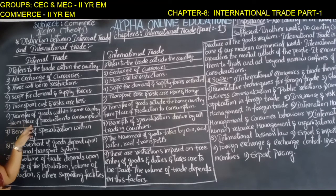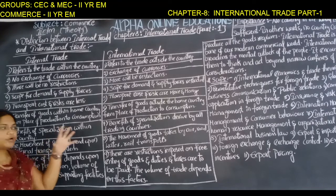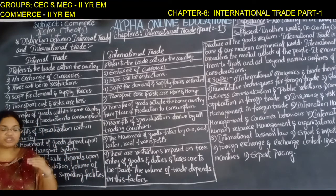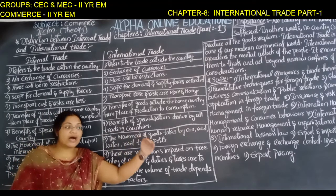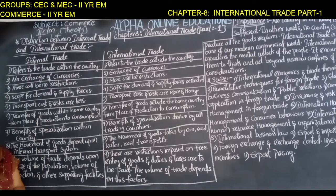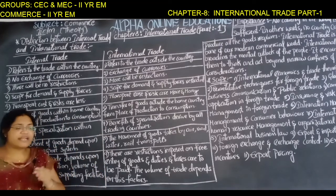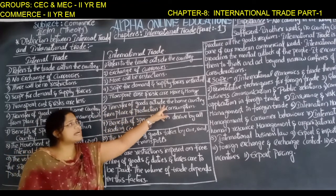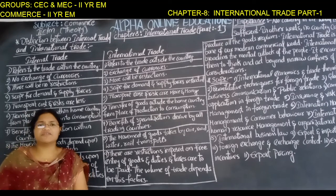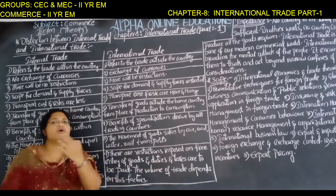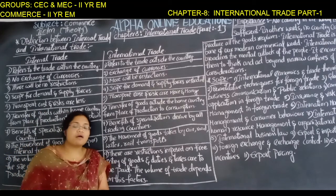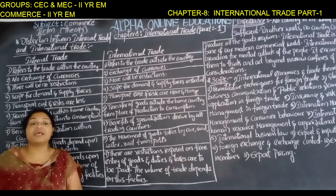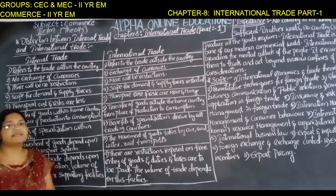In internal trade, transfer of goods happens within the home country — from the place of production to the consumer. Production takes place in one place, but consumers are spread all over the country. In international trade, production takes place in the home country but distribution takes place in host countries, so goods must travel from one country to another to reach the ultimate customer.